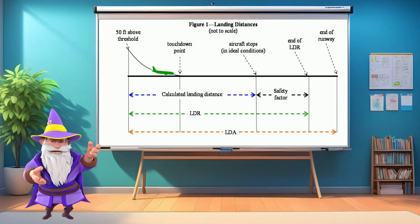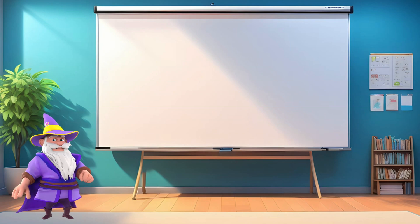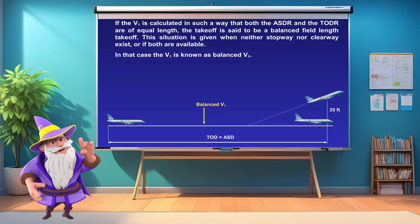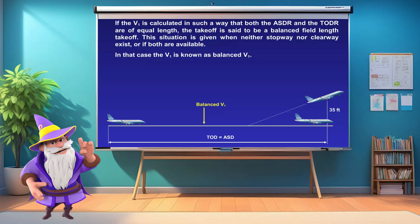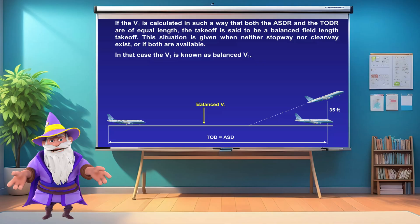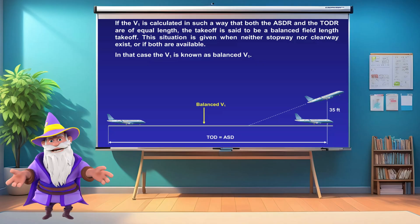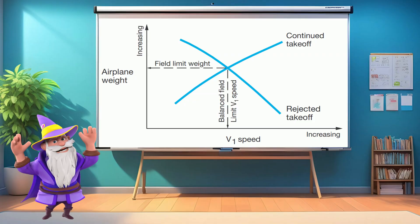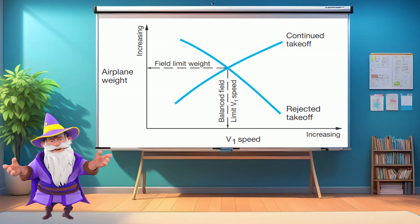A very important concept that most operators strive for is the balanced field length. The balanced field length is the runway length at which the distance required to continue takeoff after reaching V1 is equal to the distance required to abort the takeoff and come to a full stop. In other words, it's the point where accelerate stop distance required equals takeoff distance required — rejecting or continuing the takeoff at V1 requires the same amount of runway.